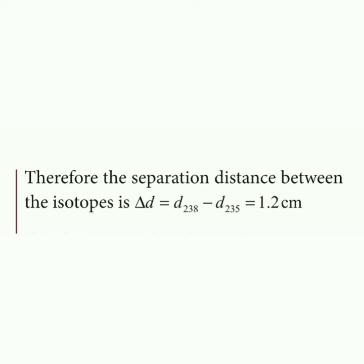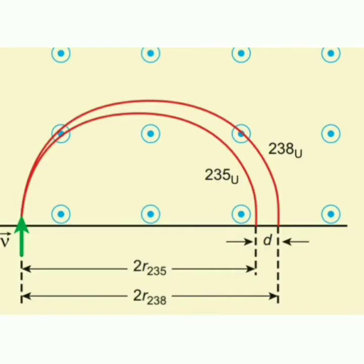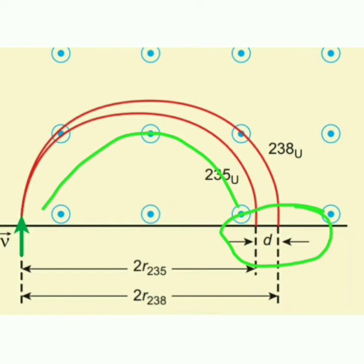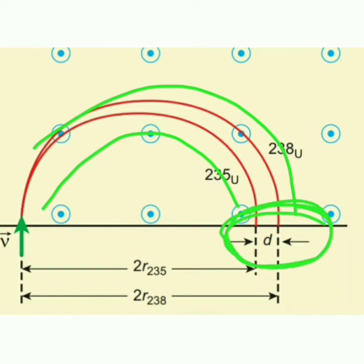The two isotopes travel semicircular paths. The difference in their diameters is D₂₃₈ minus D₂₃₅ equals 98.8 minus 97.6, which gives a difference of 1.2 cm. This is the separation distance between Uranium-235 and Uranium-238.